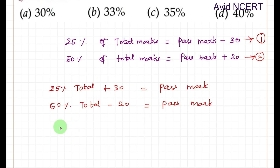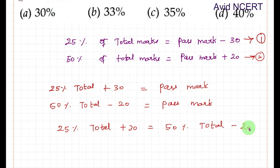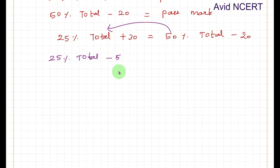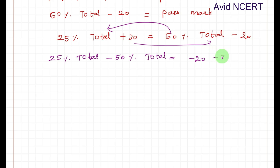Since both expressions equal the pass mark, we equate them: 25 percent of total plus 30 equals 50 percent of total minus 20. Grouping the percentage terms together gives 25 percent of total minus 50 percent of total equals minus 20 minus 30.